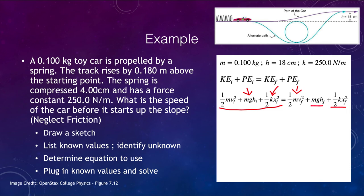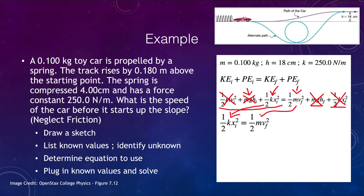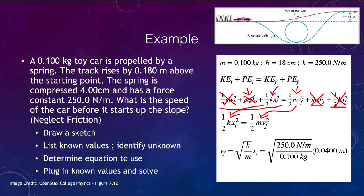We can eliminate many terms: the initial velocity is zero, the initial height isn't changing, and the final spring potential energy is zero since the spring is no longer stretched. So we are taking the initial potential energy of the spring and converting it into kinetic energy of the car. Solving for the final velocity gives the square root of k over m times the displacement. Plugging in the known values, the final velocity is 2.00 meters per second.